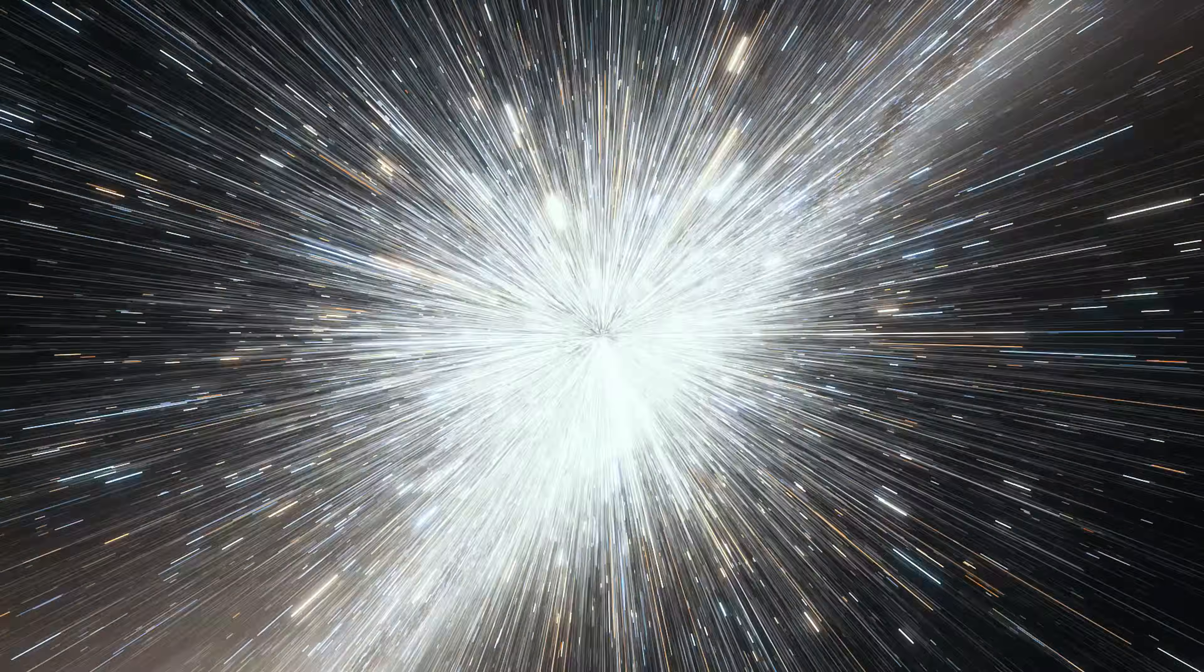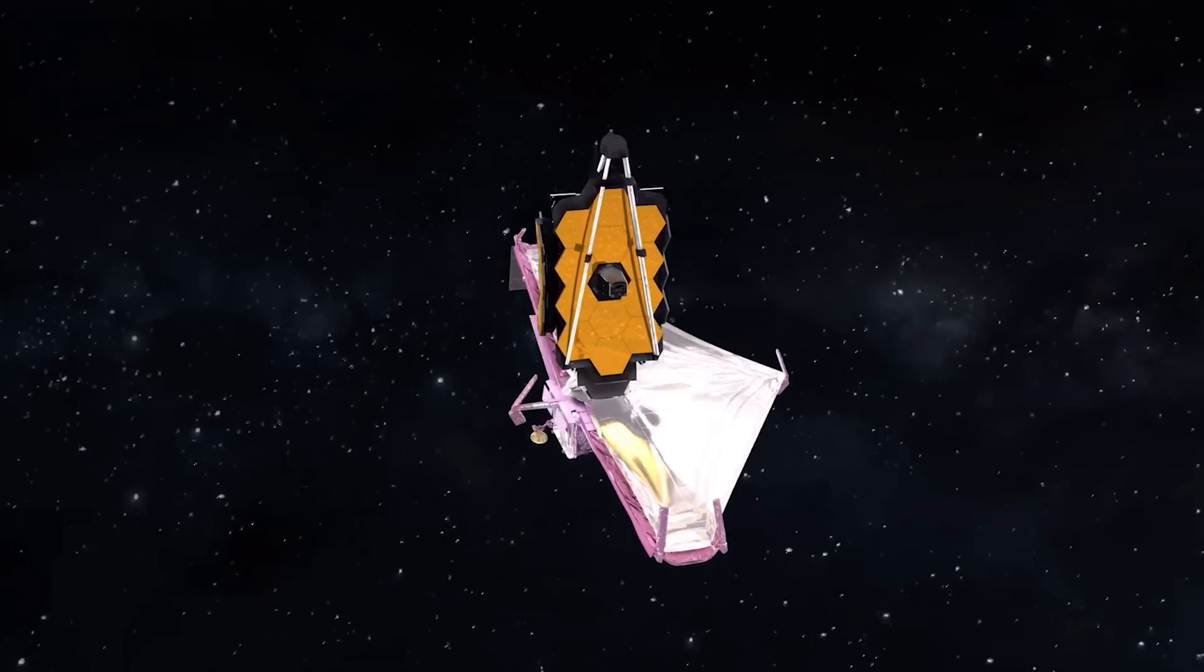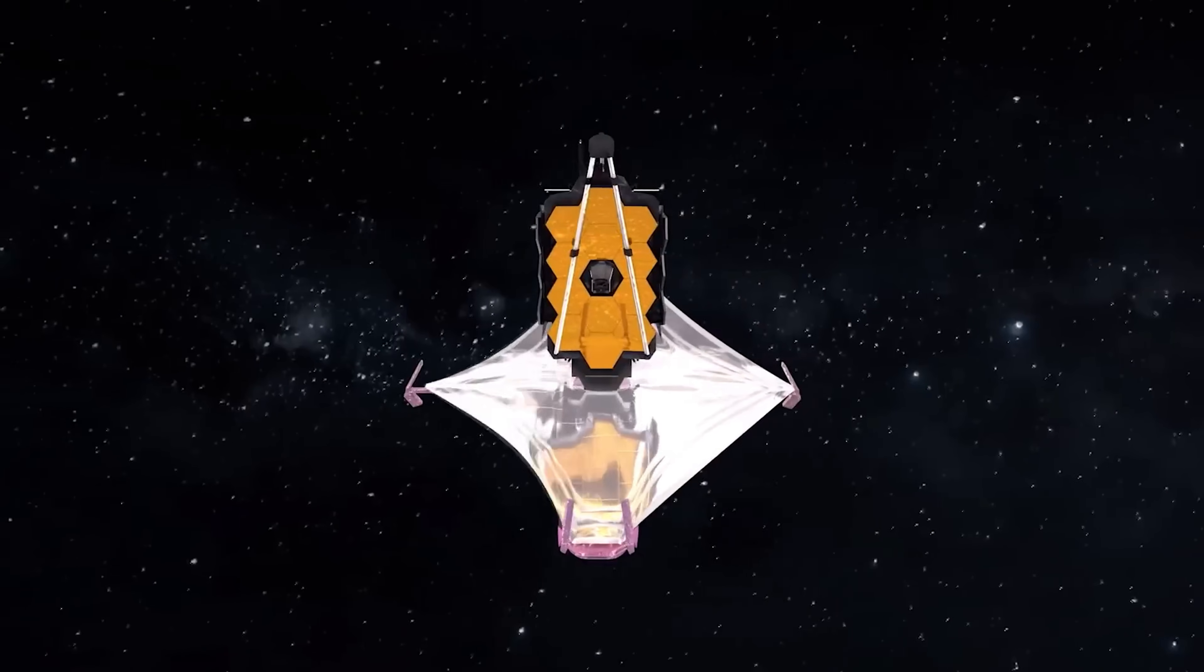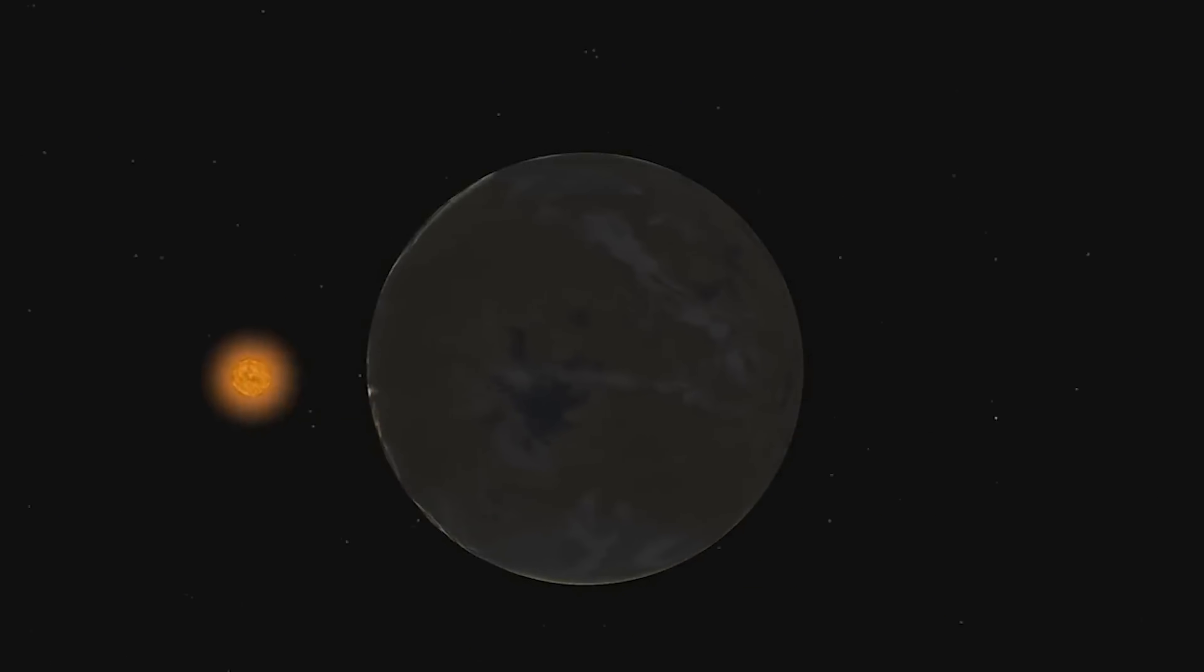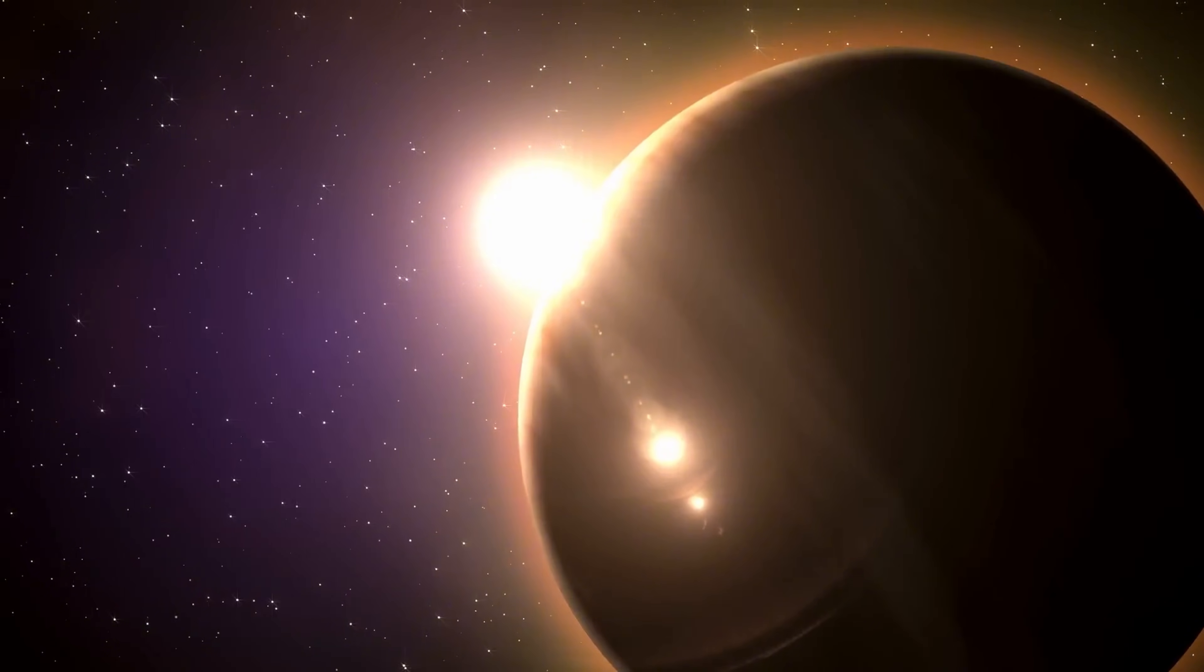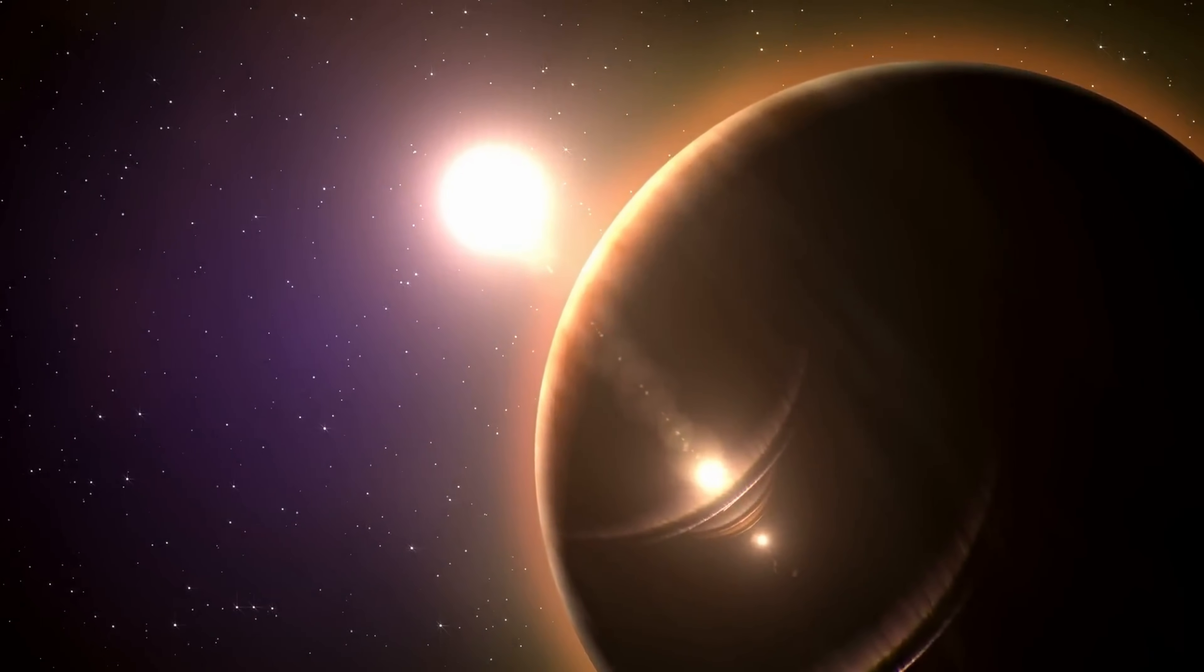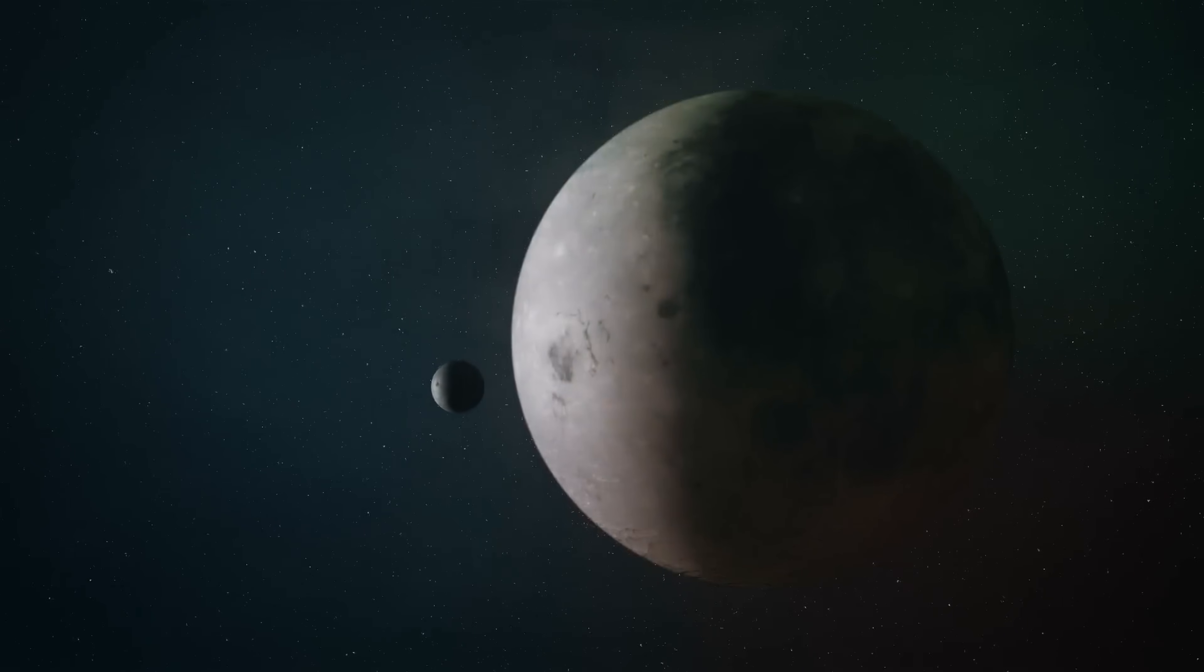Fast forward to recent years, and the excitement has only grown. Rumors circulated that the JWST had potentially detected artificial lights on Proxima Centauri b, an exoplanet orbiting the closest star to our Sun. While it turned out to be a misunderstanding, actually related to distant observations of a brown dwarf, it reminds us just how thrilling each new finding can be.